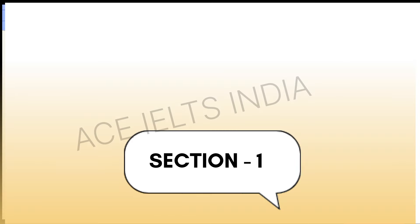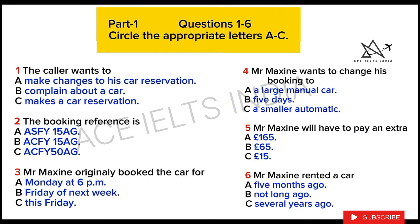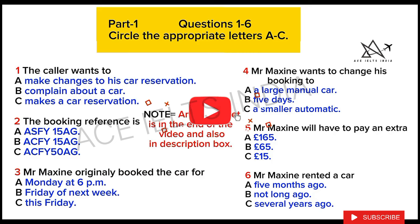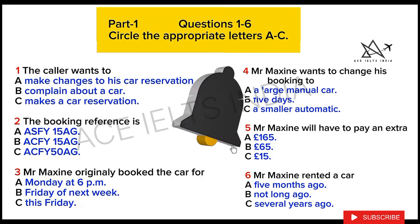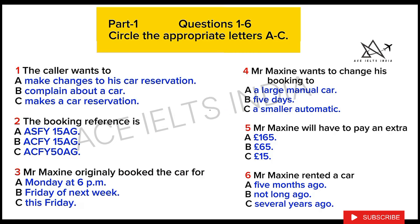You are going to listen to a conversation between two people: a customer and a representative of a company which rents cars. There are three alternative answers, A, B and C, for each question. Decide which alternative is the most suitable answer and circle the appropriate letter. First, you have some time to look at questions one to six.